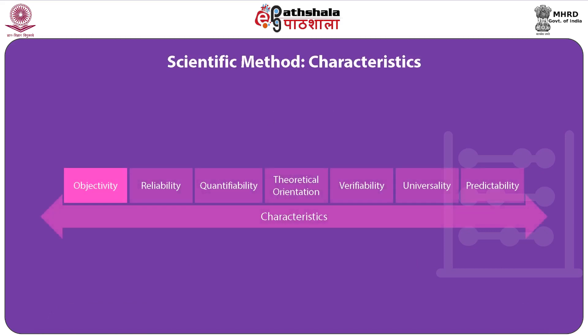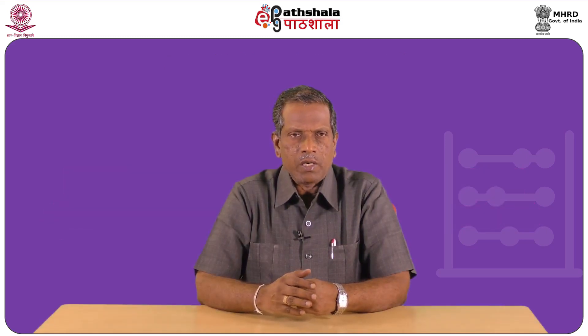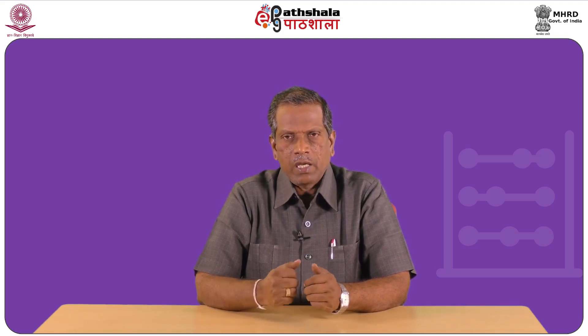The second characteristic of scientific method is reliability. The information to be collected from the field about social life and human behavior should be reliable. For achieving high quality, most researchers follow standardization procedures in developing data collection instruments and also during classification and analysis of the data.